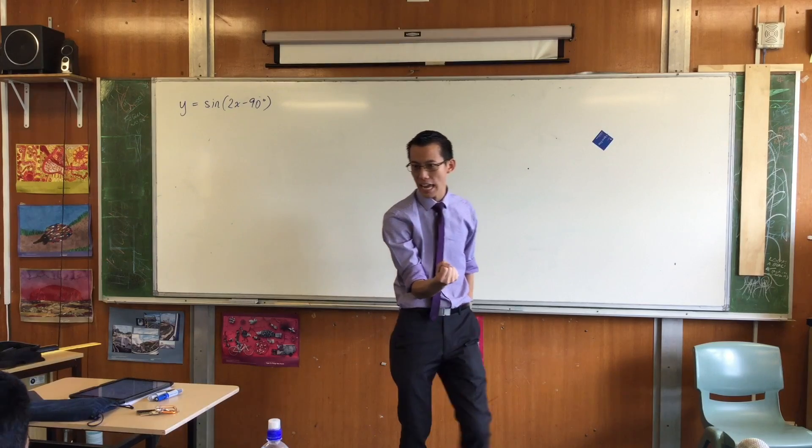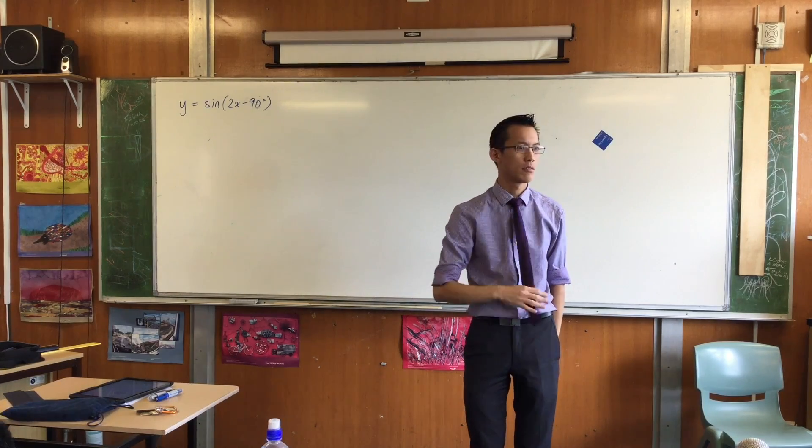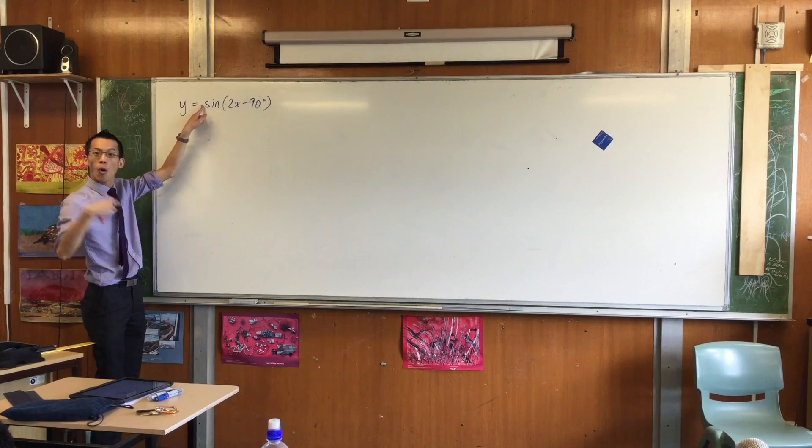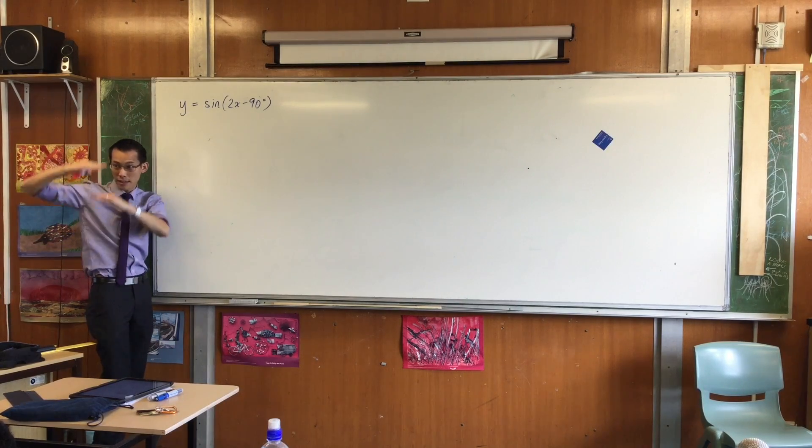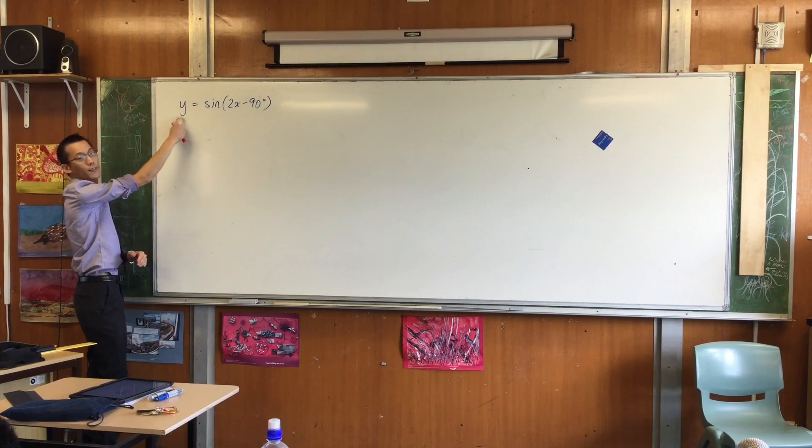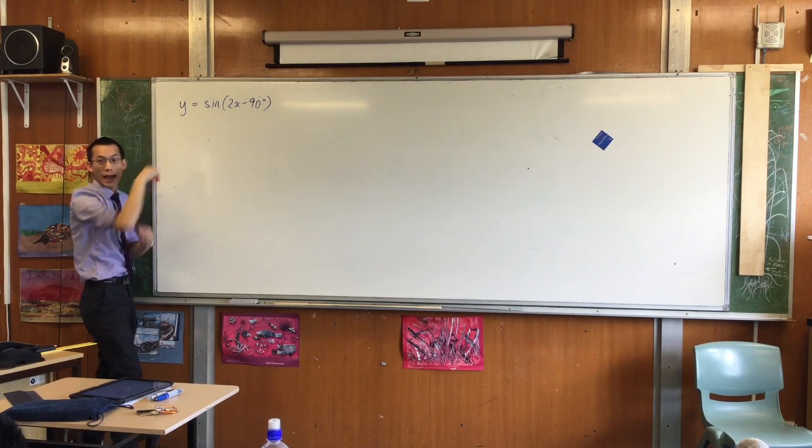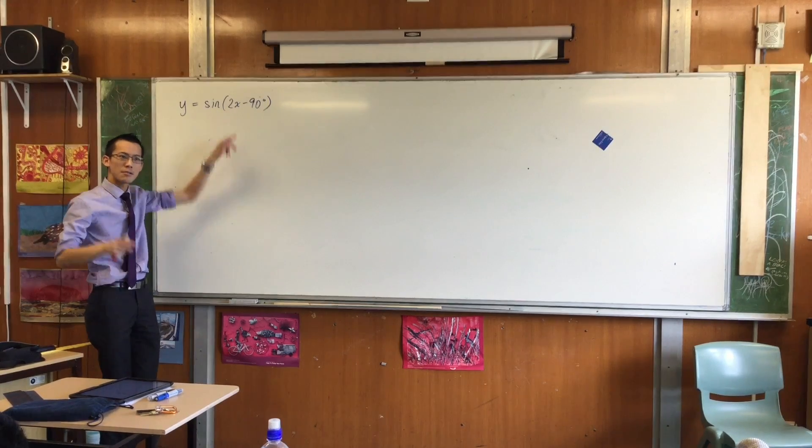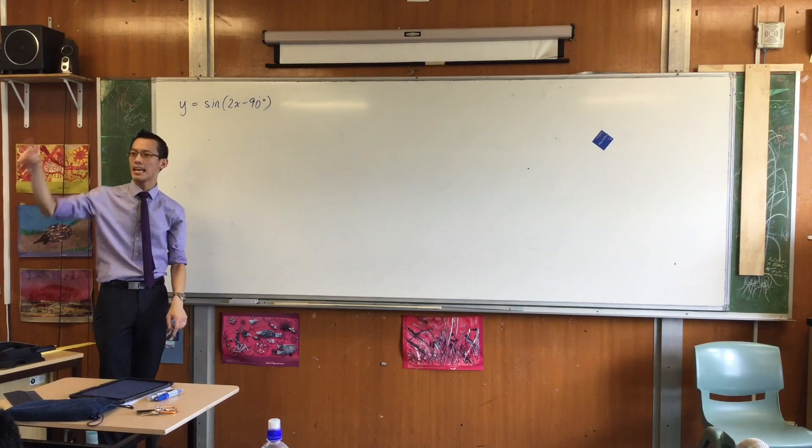If I wanted to change the amplitude, how would I change it? I would put it out the front over here, or, because amplitude is an up-down thing, I would put a number dividing or multiplying this, because y is an up-down thing. It's vertical. So that changes the frequency. Is it more frequent or less frequent?